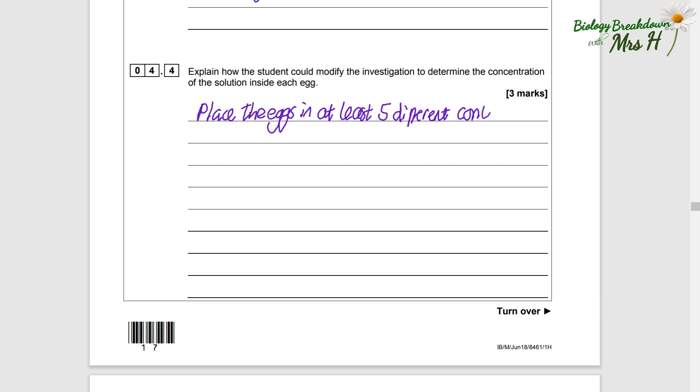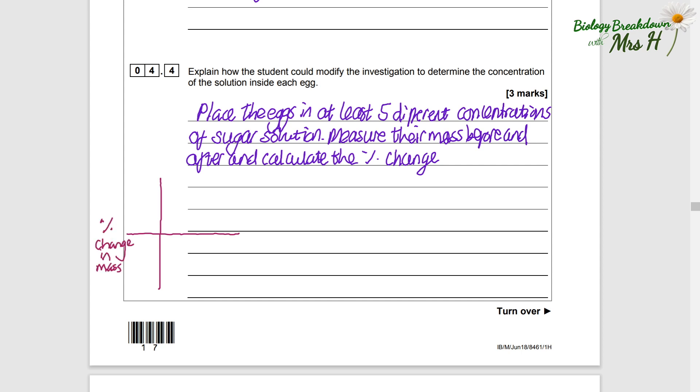Let's change the chips to eggs. So if we place the eggs in five different concentrations of sugar solution and measured their mass before and after, we could calculate their percentage change and then plot this onto a graph. I'll sketch one, you don't have to do that, but it's just to help you remember. Percentage change in mass on the y-axis with increase and decrease, and concentration of sugar solution on the x-axis. Plot the points, draw a curve or straight line of best fit. All of these chips increased in mass at these concentrations of sugar solution because water moved into the eggs. All of these eggs decreased in mass because water moved out.